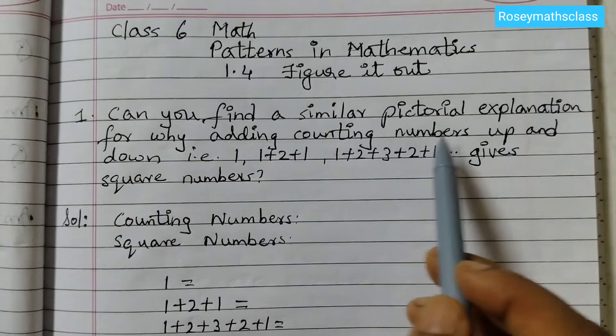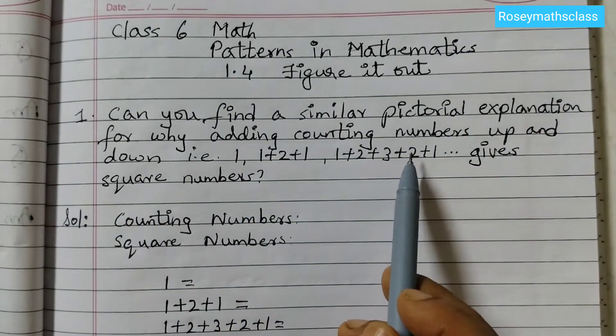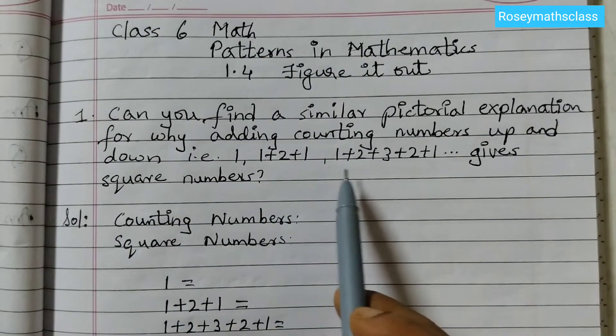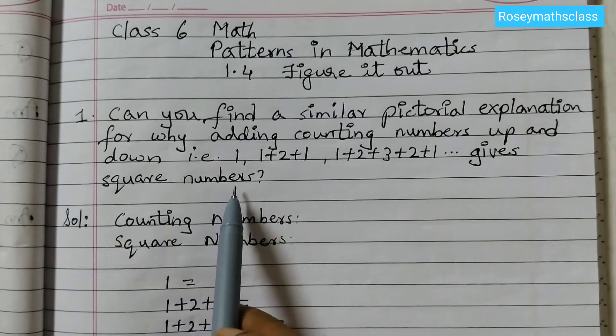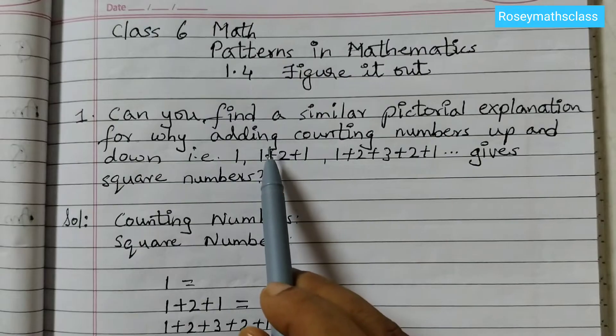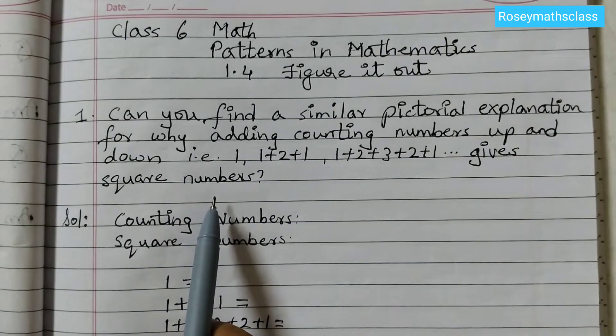Can you find a similar pictorial explanation for why adding counting numbers up and down, that is 1, 1 plus 2 plus 1, 1 plus 2 plus 3 plus 2 plus 1 gives square numbers. So here we need to show the relation between adding counting numbers up and down and the square numbers.